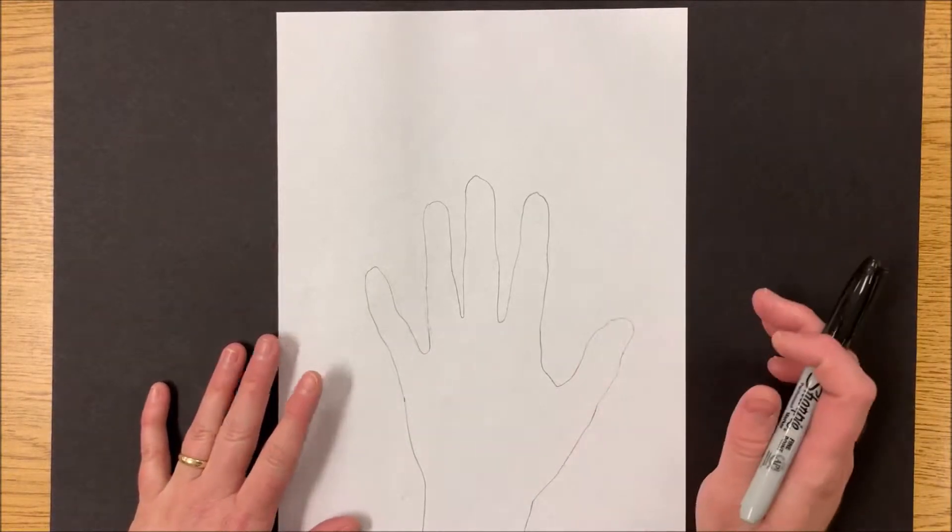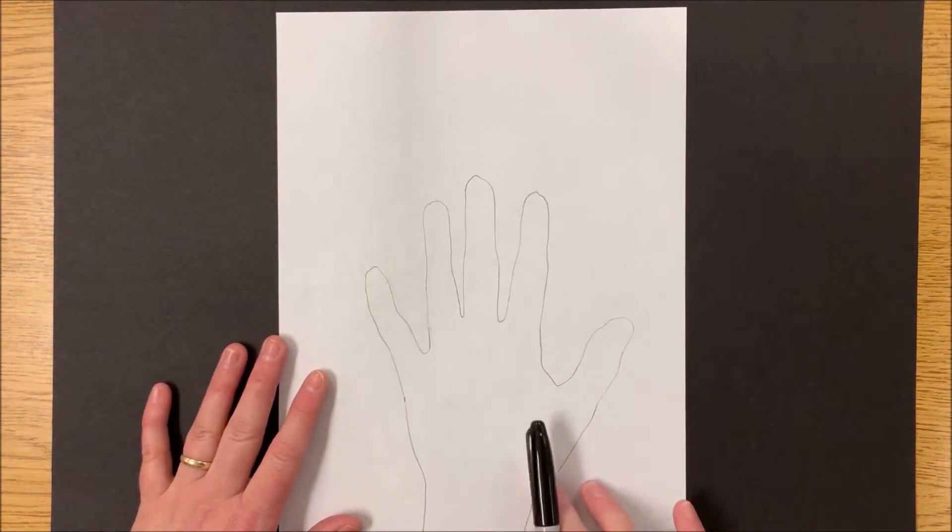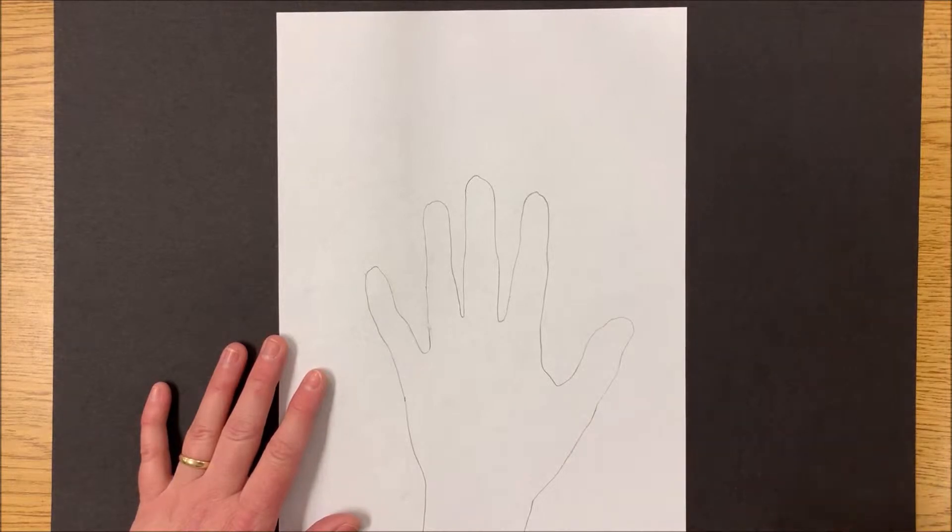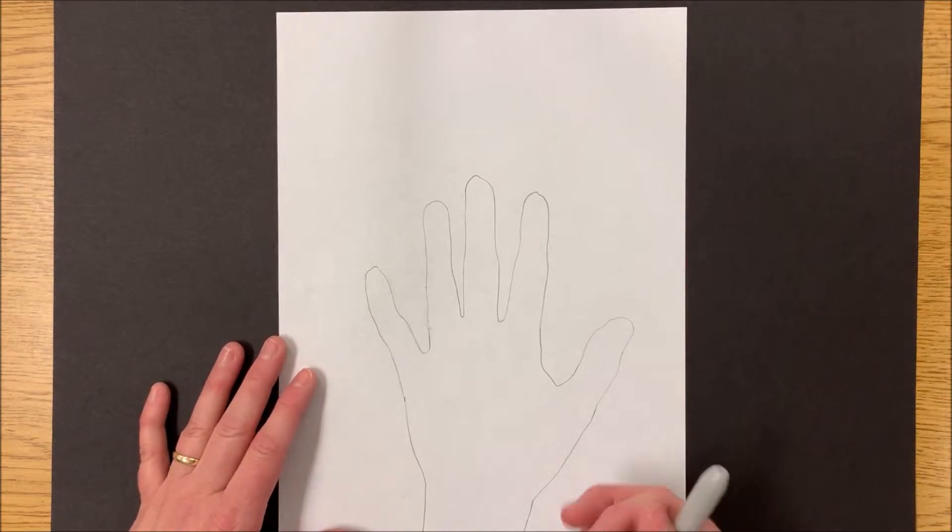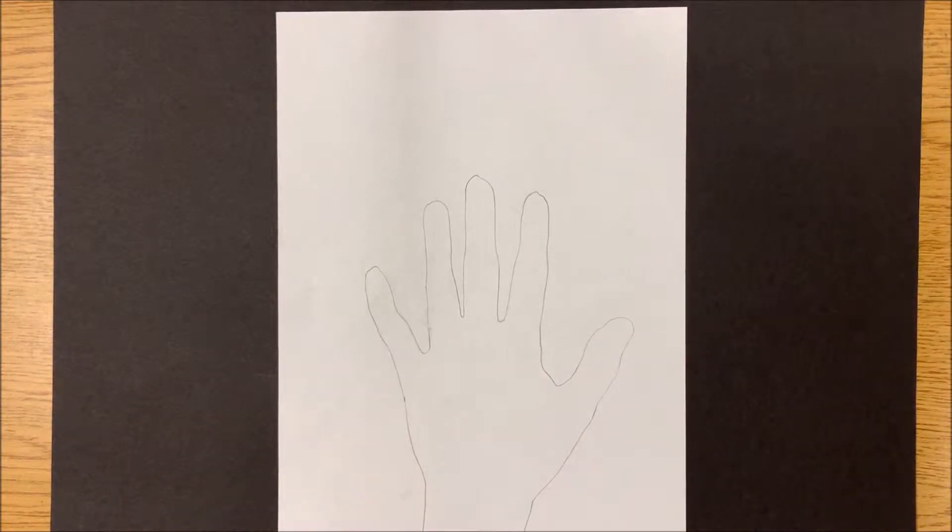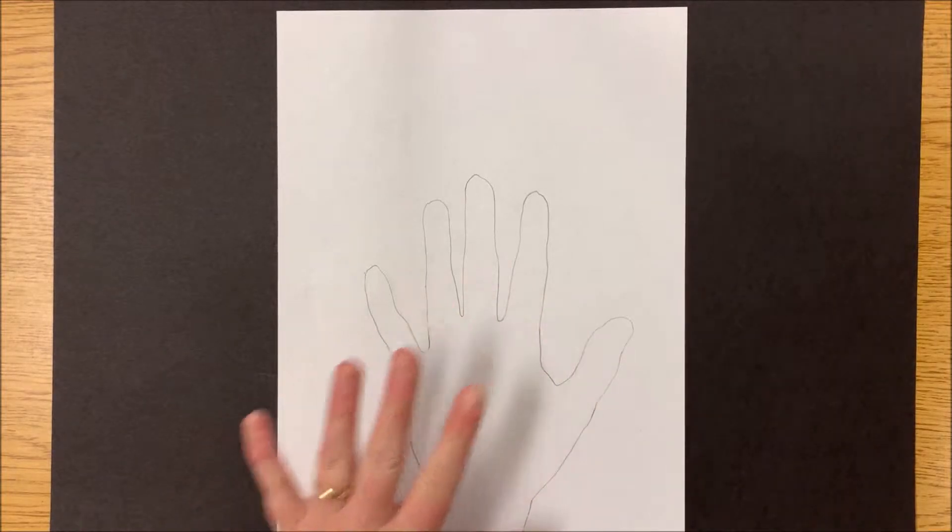So today's lesson we're going to be talking about how to draw a hand in the op art or optical illusion that is popping off the page. What I've started with is tracing my hand with pencil and the trick with tracing is to keep the pencil straight up and down.